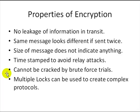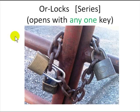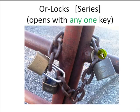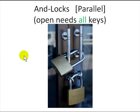You can also create complex protocols using multiple locks. There are two kinds of locking arrangements. In the OR case, if you have a key to either the left lock or the right lock you can open the door — two people can each hold a key and either one can open it. In the AND case, the door has two locks in series and both keys must be present to open it. Using these, you can create any combination, like N-out-of-M — for example, 5 out of 10 people must be present to open the door.